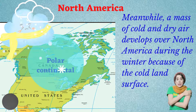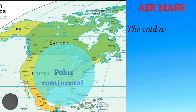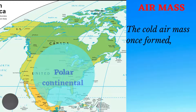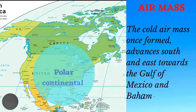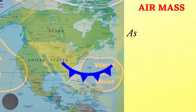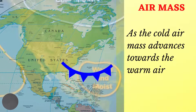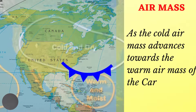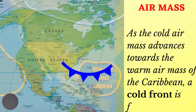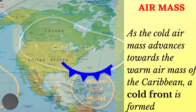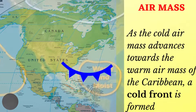This polar continental air mass develops over the northern part of North America. This polar continental air mass, called Northers, once formed, will advance south and east towards the Gulf of Mexico and the Bahamas. As the cold air mass advances towards the warm air mass of the Caribbean, a cold front will be formed.